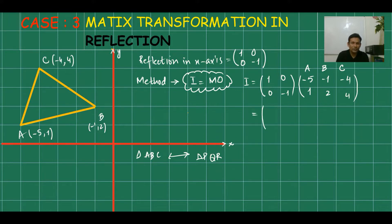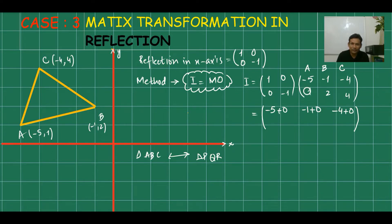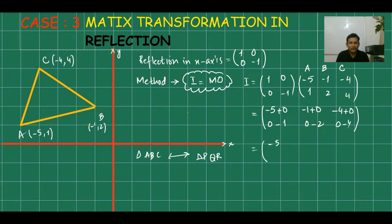Now for the multiplication: first row × first column gives −5 + 0 = −5; first row × second column gives −1 + 0 = −1; first row × third column gives −4 + 0 = −4. Second row calculations give 0 + (−1) = −1; 0 + (−2) = −2; and 0 + (−4) = −4. So the final results are P = (−5, −1), Q = (−1, −2), and R = (−4, −4).